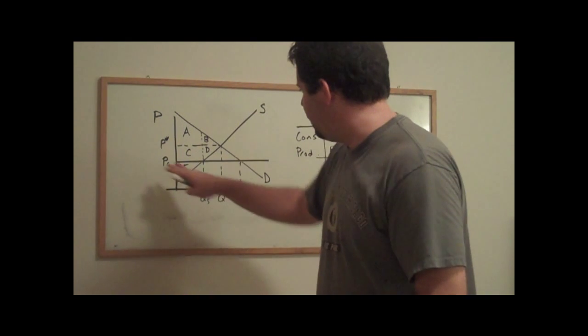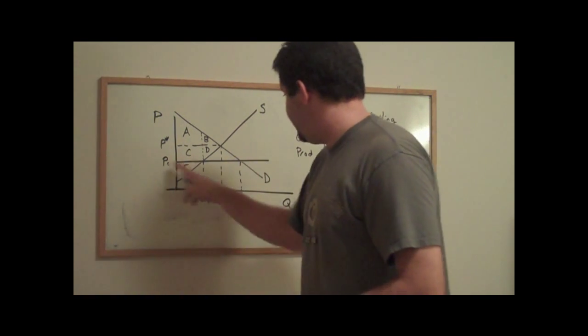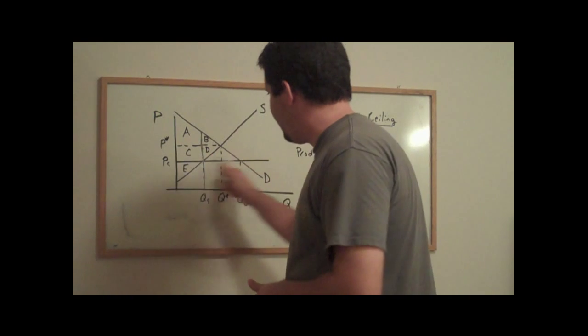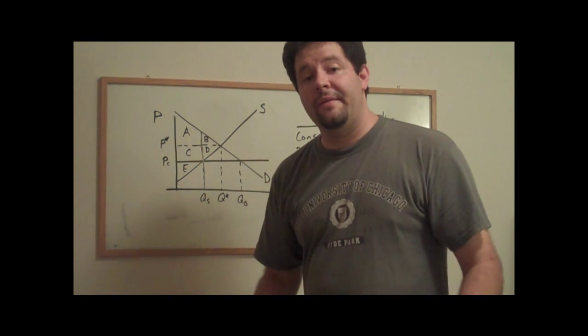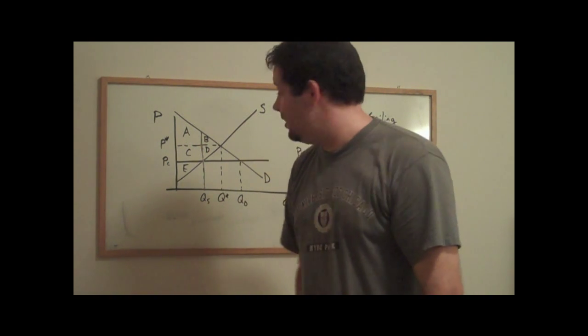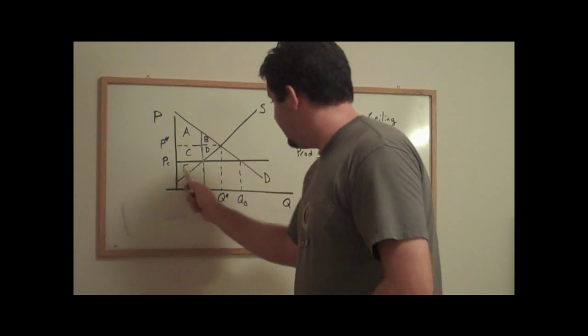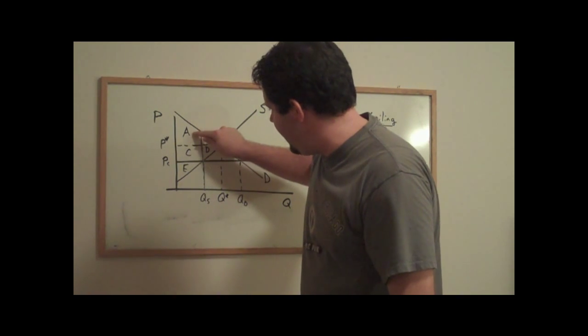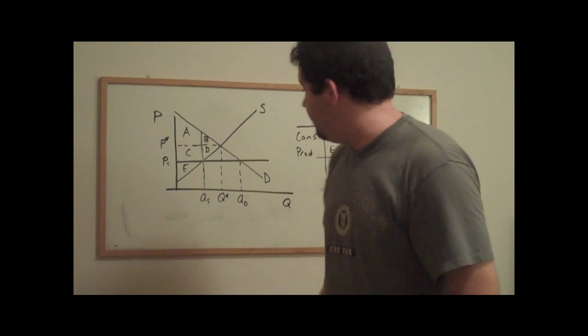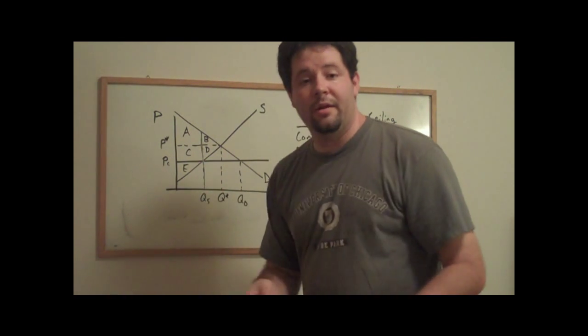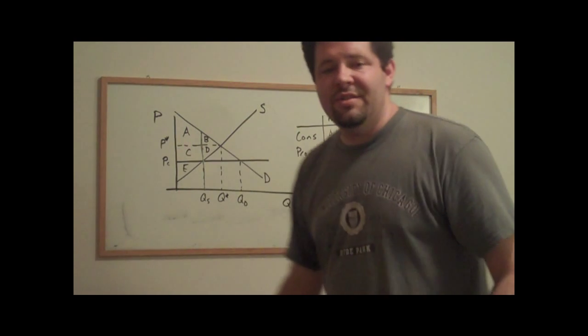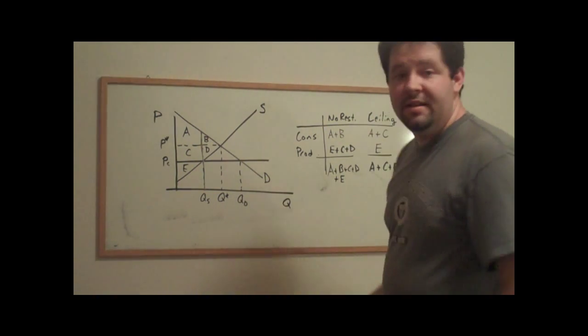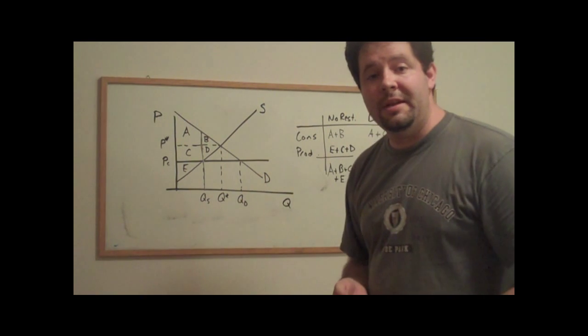Now let's consider what happens if the price ceiling is a regulated price of PC, and only a quantity of QS is traded. Using the standard definitions of consumer surplus and producer surplus, consumer surplus is going to be out to the quantity traded from the price up to the demand curve. That's going to include A plus C. And the producer surplus is going to be from the price down to the supply curve out to the quantity traded, area E. If you look at the difference between total surplus after the ceiling and before the ceiling, areas B plus D are going to be deadweight loss.